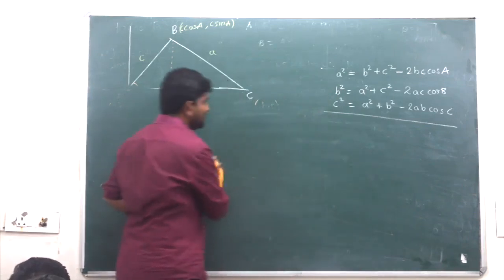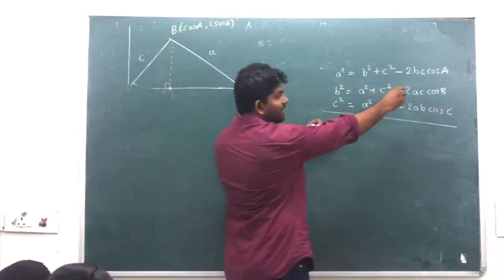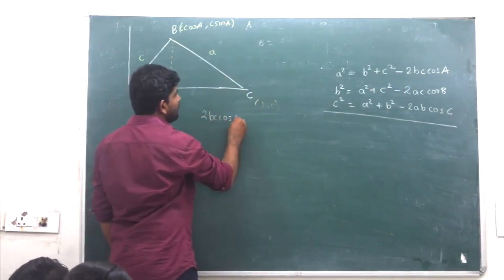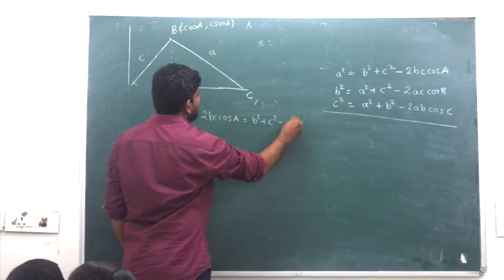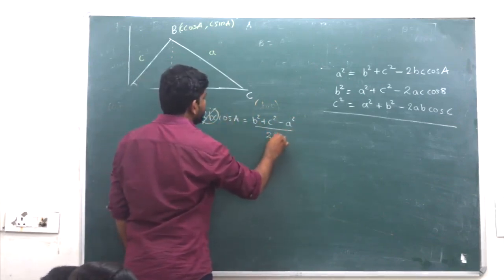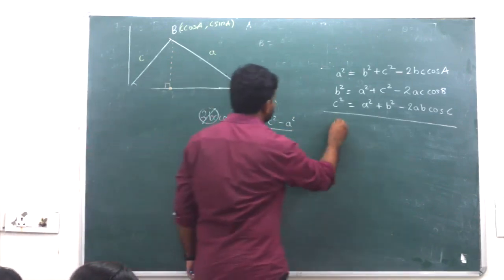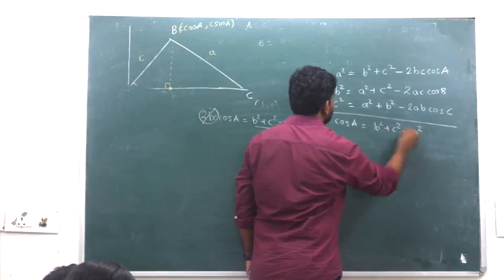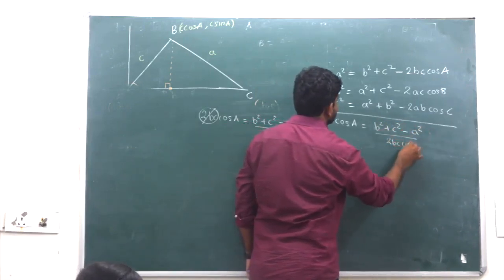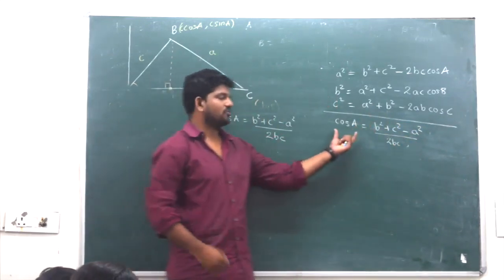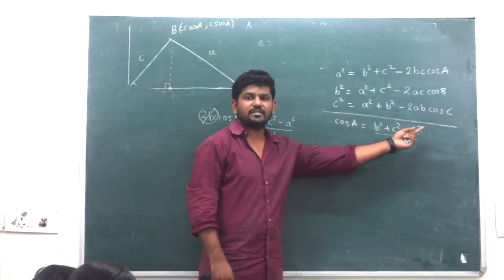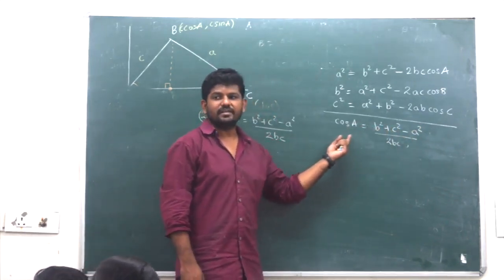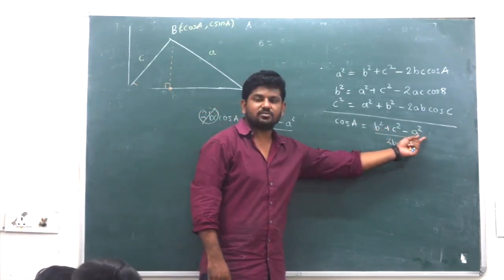How to apply cosine rule? It's straightforward. From the formula: 2bc cos A equal to b square plus c square minus a square. Therefore, cos A equal to b square plus c square minus a square divided by 2bc. Again, the cos A formula is b square plus c square minus a square divided by 2bc. Similarly, cos B equals a square plus c square minus b square upon 2ac.